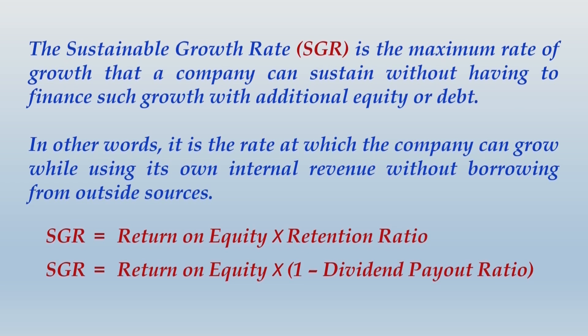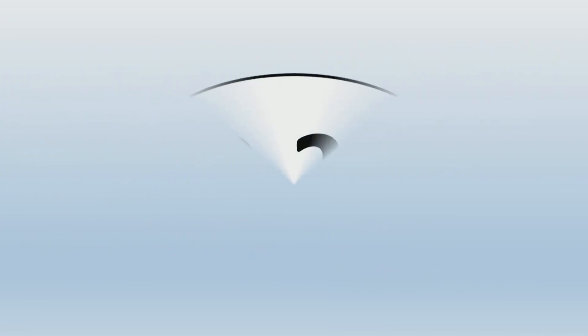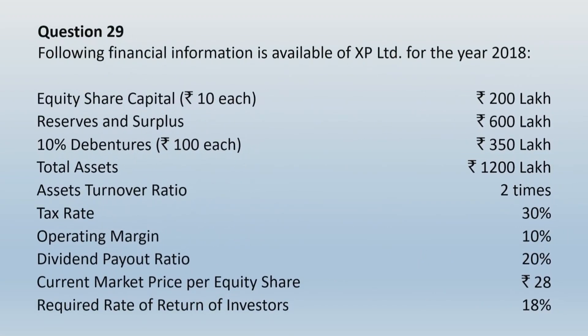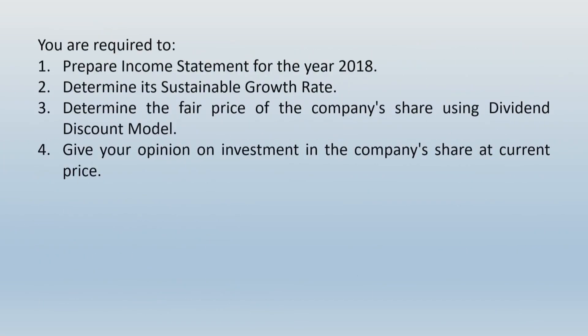Let us take up question number 29. Following financial information is available for XP Limited for the year 2018: equity share capital of ₹10 each totaling ₹200 lakhs, reserves and surplus ₹600 lakhs, 10% debentures ₹350 lakhs, total assets ₹1,200 lakhs, assets turnover ratio 2 times, tax rate 30%, operating margin 10%, dividend payout ratio 20%, current market price per equity share ₹28, and required rate of return of investors 18%.